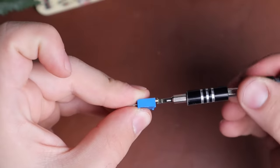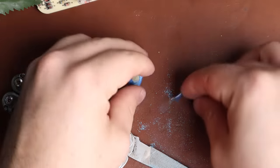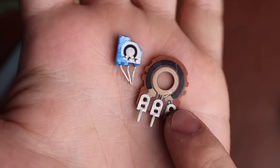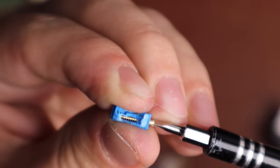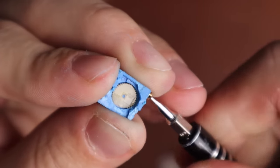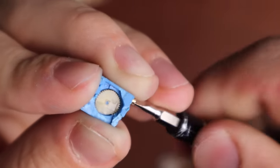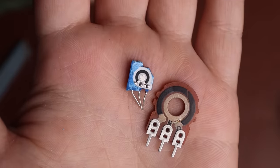Going back a bit to trim pots, we can break one open and see that it's essentially a tiny version of the potentiometer. The main difference is that we have a helical screw which turns a gear slowly for fine adjustments on the device. So essentially, it's just a very small, fine adjustment version of the potentiometer.